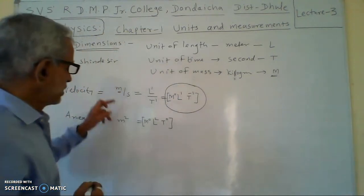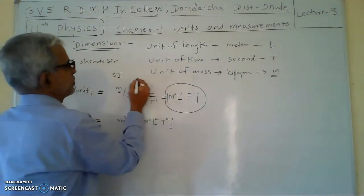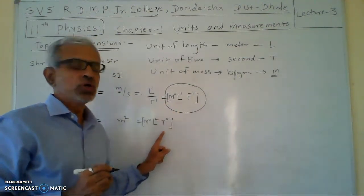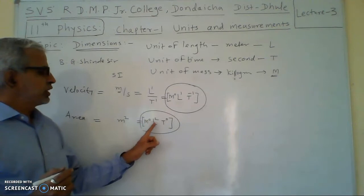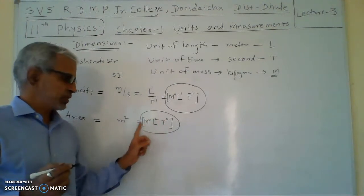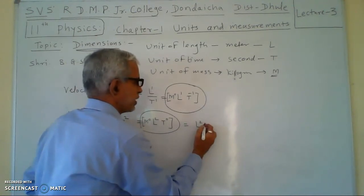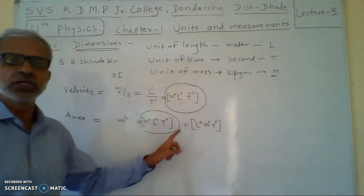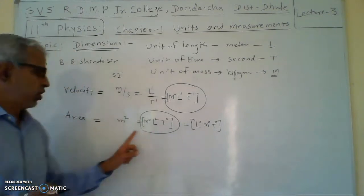The dimensional formula of area is M⁰L²T⁰. The unit of area is meter square, and meter is represented by L, so the dimension becomes L².